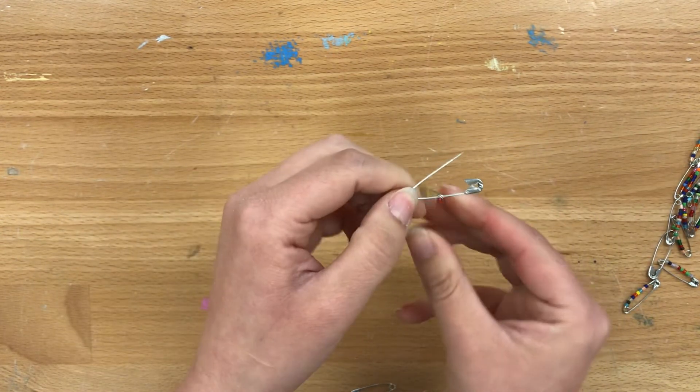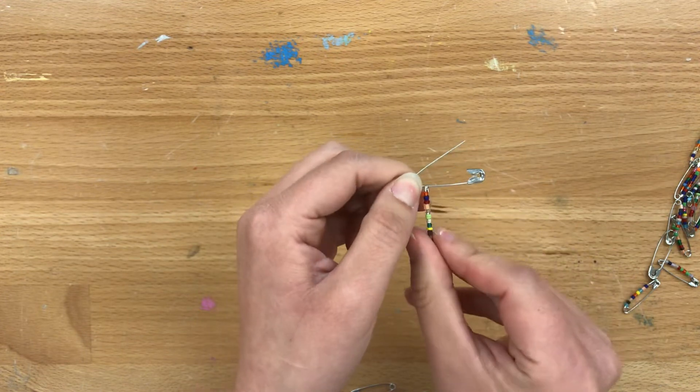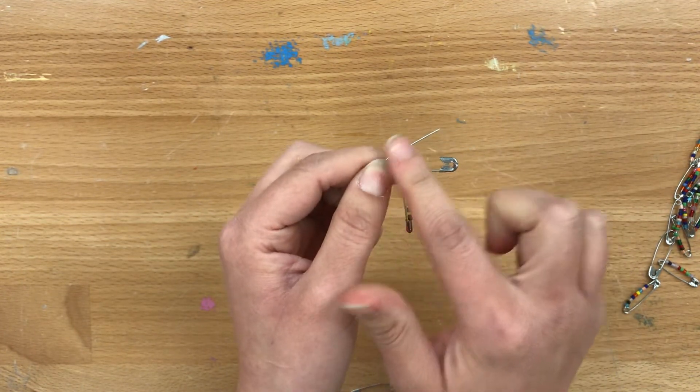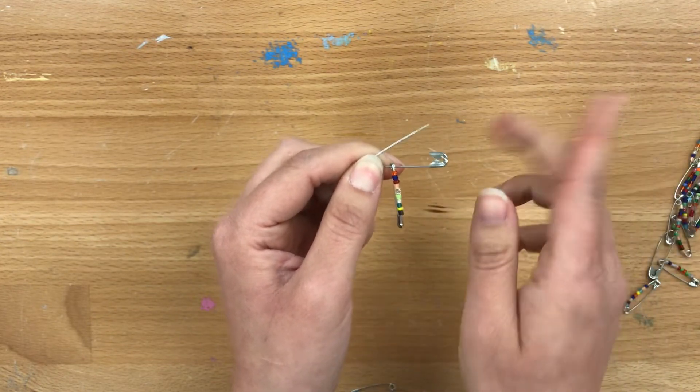So make sure that if you want, if you're right-handed and you want a pin that's for a right-handed person, you're going to make sure that this pointy pin stem is facing to the right.